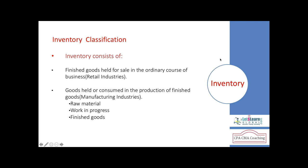Let's discuss inventory in detail. Inventory is a stock item which is purchased and held for sale in retail industries — we buy to sell. Any item we buy to sell is classified as inventory. Inventory can also be bought to consume in the production process to get finished goods, which we then sell off.